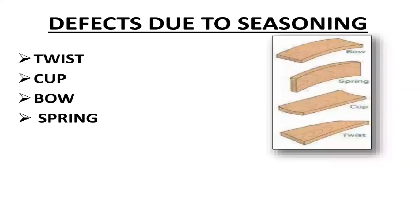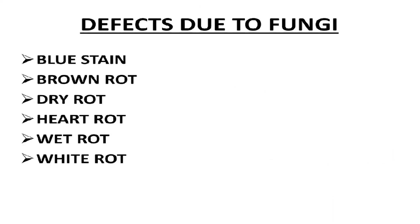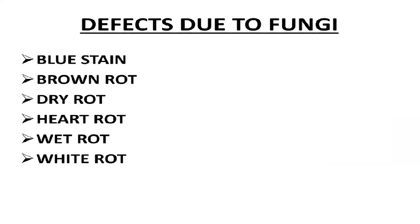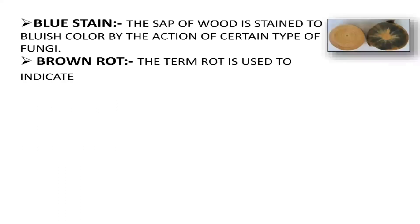Defects due to seasoning include: twist, cup, bow, and spring. Defects due to fungi include: blue stain, brown rot, dry rot, heart rot, wet rot, and white rot. Among these, we often see blue stain and brown rot. Blue stain: the sap of the wood is stained to a bluish color by the action of certain types of fungi. Brown rot is the term used when fungi cause brown decay in wood.